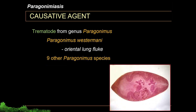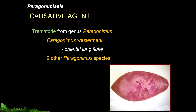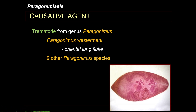The causative agent of Paragonimiasis is a trematode from the genus Paragonimus. The most common species is Paragonimus westermani, or the oriental lung fluke. However, there are other Paragonimus species.